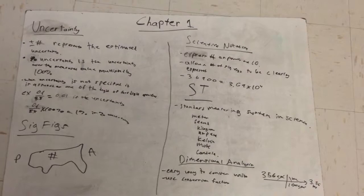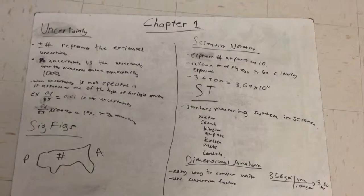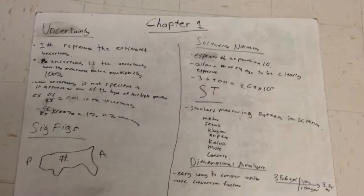Let's first start with uncertainty. Plus or minus a number represents the estimated uncertainty. Percent uncertainty is the uncertainty over the measured value multiplied by 100, which converts it into percent.